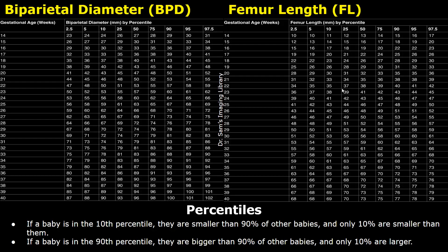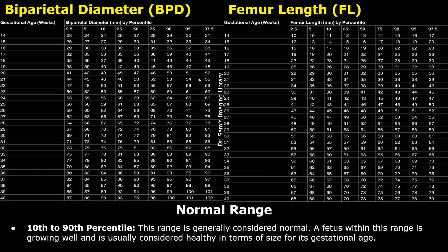If a femur length measurement is 53 millimeters in a 30-week fetus, it falls in the 10th percentile according to this table. If a BPD measurement is 71 millimeters in a 30-week fetus, it falls into the 5th percentile according to this table.